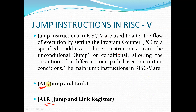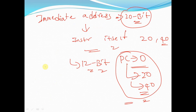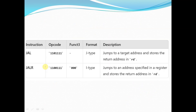There are two types of jump instructions: the Jump and Link instruction (JAL) and the Jump and Link Register instruction (JALR). For the JAL instruction, the opcode is 1101111, there is no funct3 field, and the format is J-type.